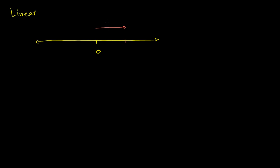If you start at 0 and add 10, you get 10. Move that distance to the right again and you add 10 again, getting to 20. We could keep going to 30, 40, 50, and so on. Going in the other direction — moving that same distance to the left — you're subtracting 10. So 10 minus 10 is 0.